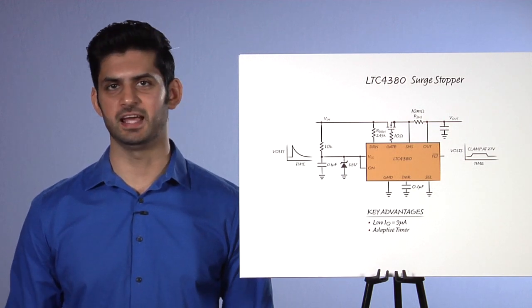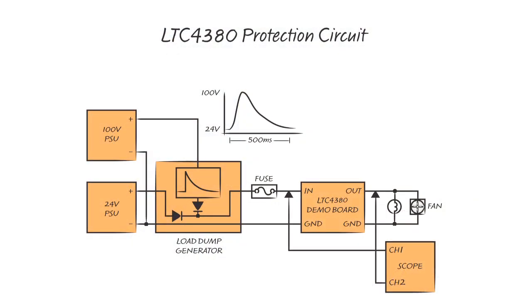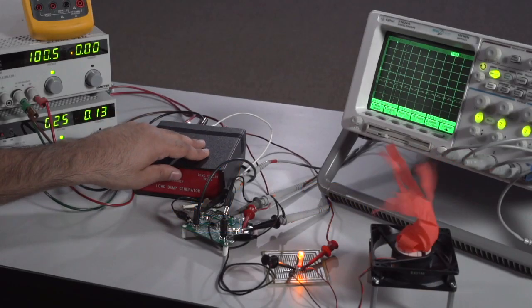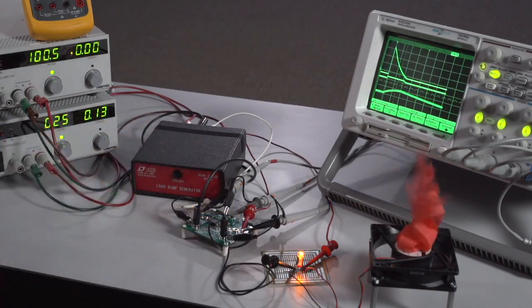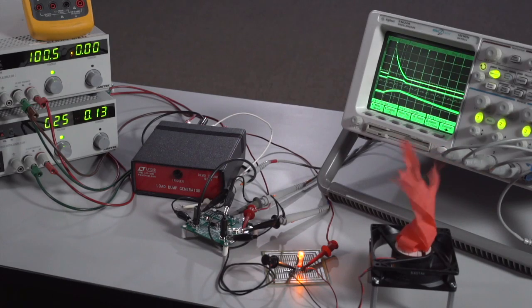Let's look at the device in action. I'm using the standard demo board of the LTC4380. The clamp voltage is set to 27 volts by grounding the select pin. Let's send the same 100-volt pulse that blew up our TVS and see how the 4380 holds up. The light bulb stays on and the load is uninterrupted.